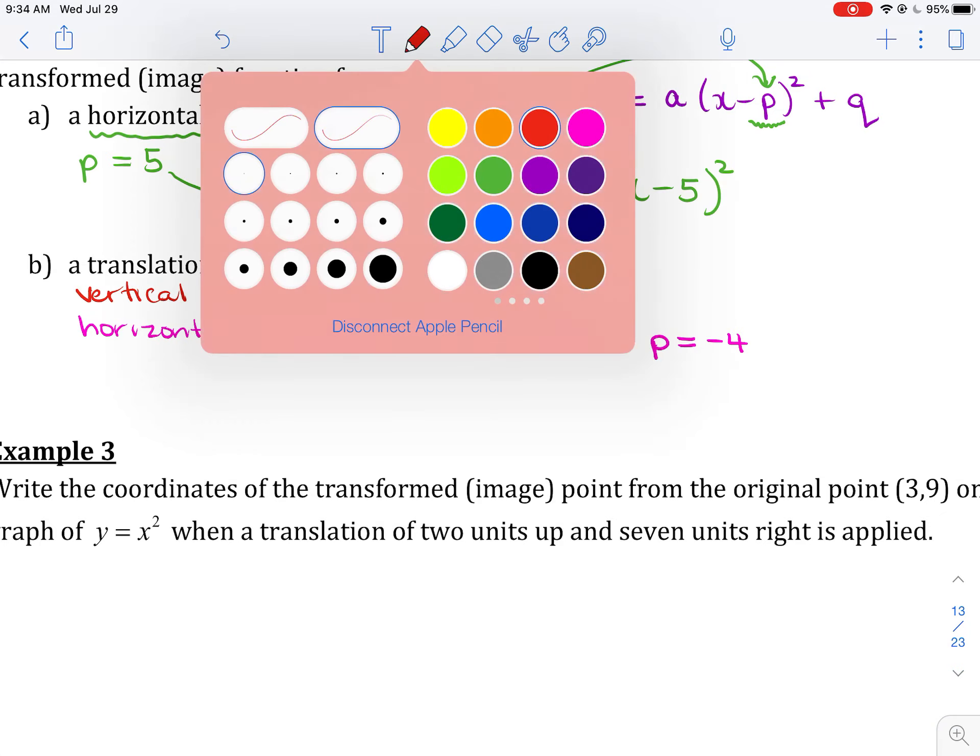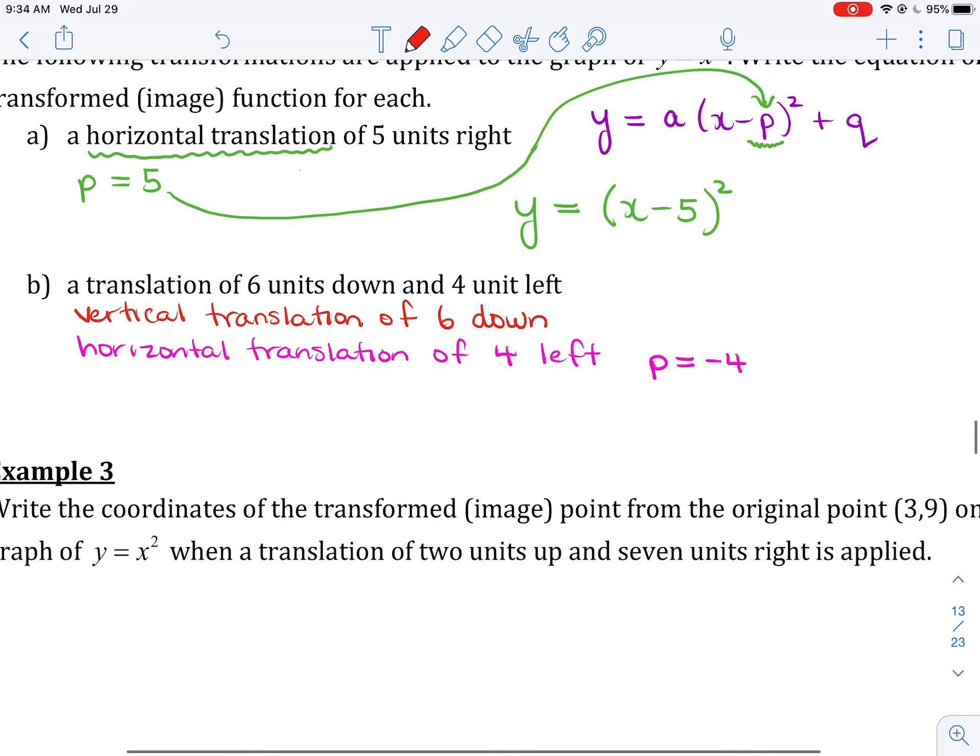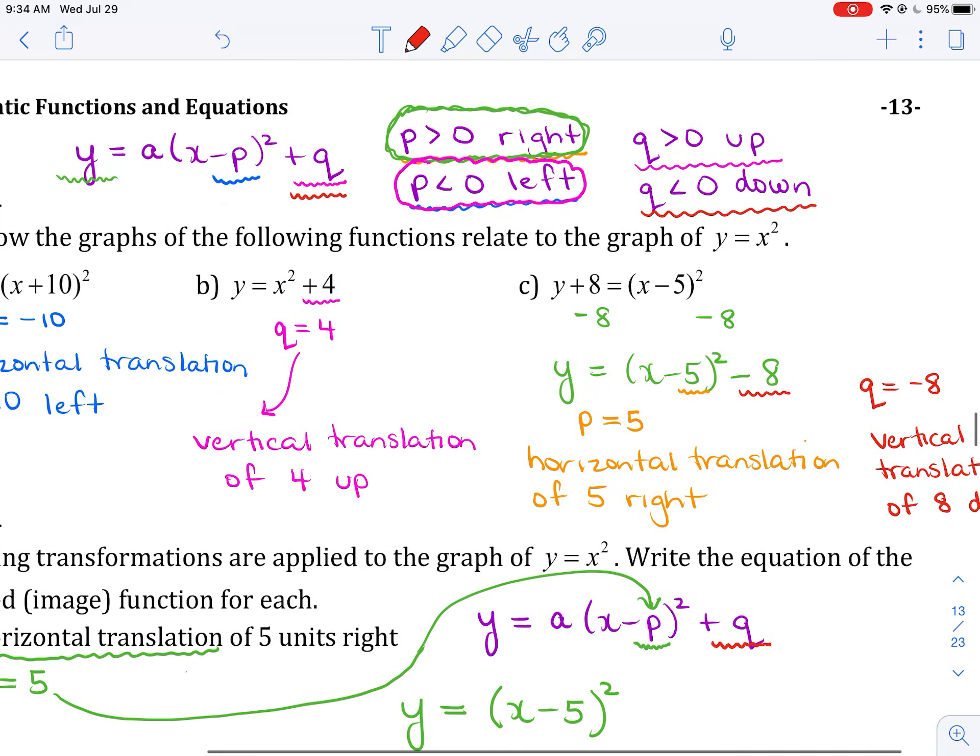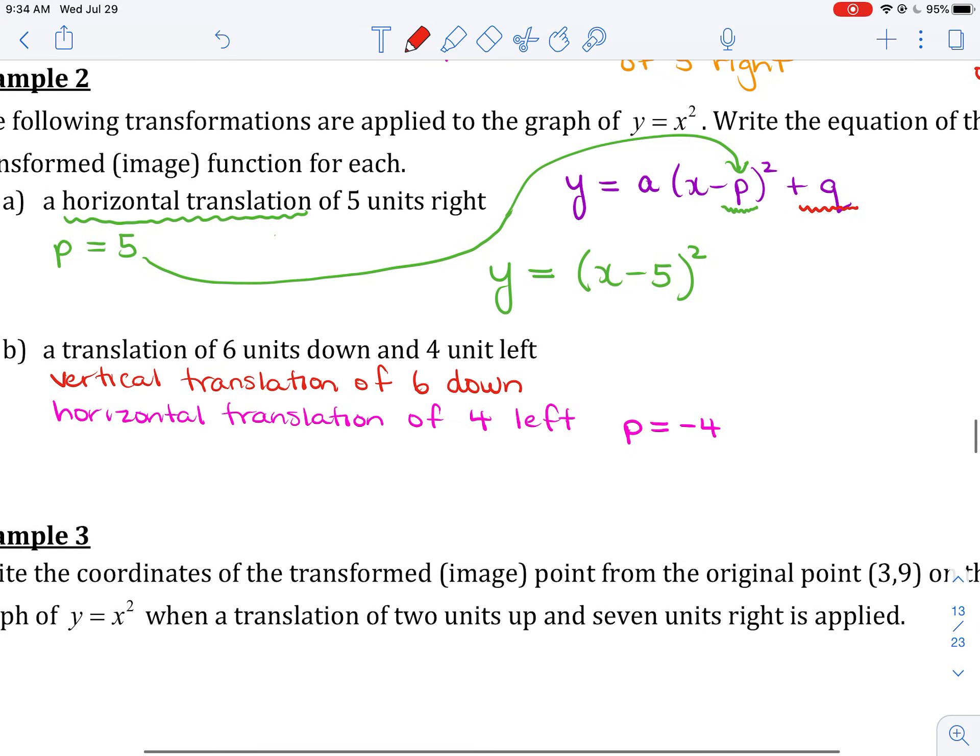Now, for a vertical translation, is it A, P, or Q that causes the vertical translation? And I'm going to claim that that's Q. And if I want the graph to go 6 down, then I need Q to be less than 0. So I'm going to need Q to be negative 6.